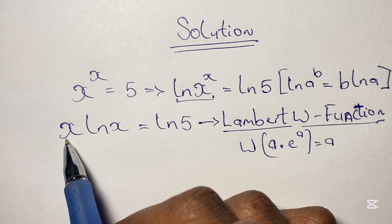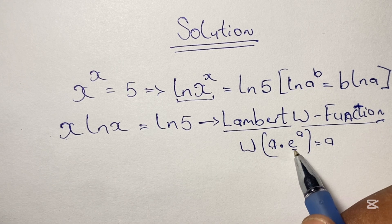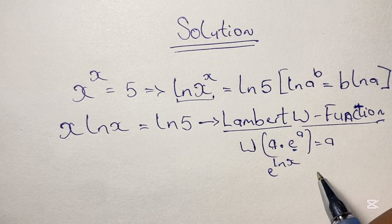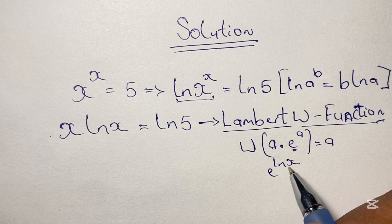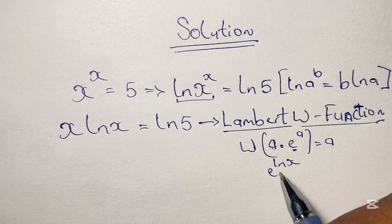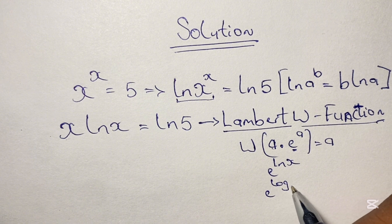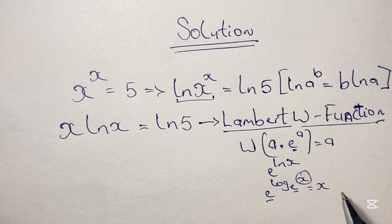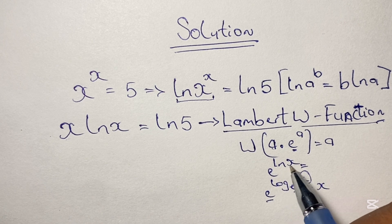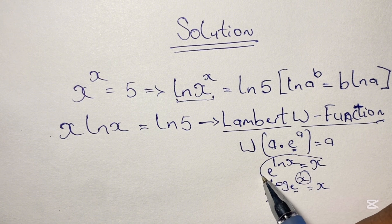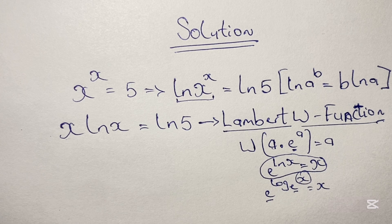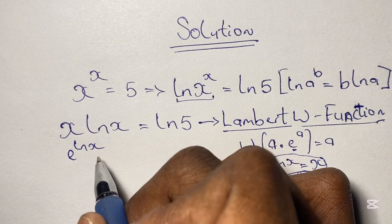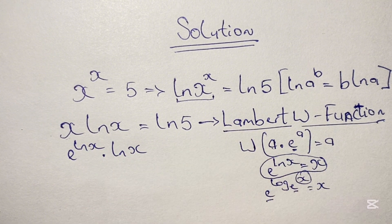We need to write our equation in the form of a times e to the power of a. We do this by rewriting x as e to the power of ln x, since the natural log cancels the e, leaving us with x. Substituting this in, we get e to the power of ln x, times ln x, equals ln 5.